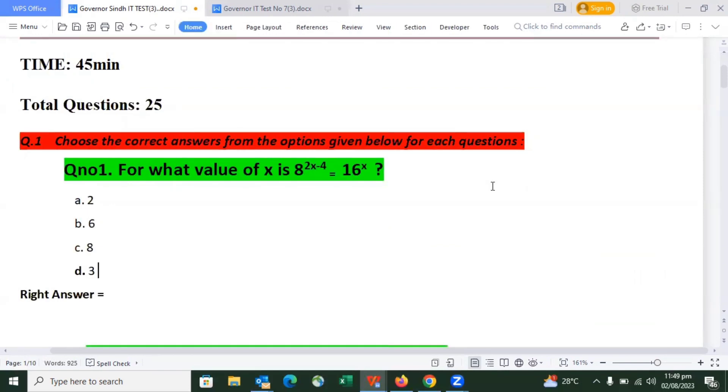Question 1: For what value of x is 8 power 2x minus 4 equal to 16 power x? This is what I have already discussed before, and this is the proper solution. The right answer is option number 3, which is 6. Option B is the right answer to this question.